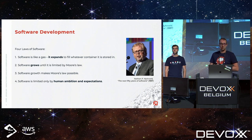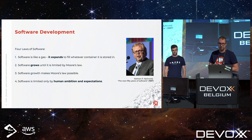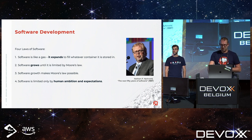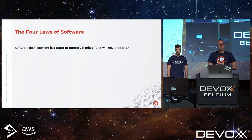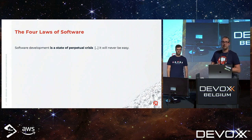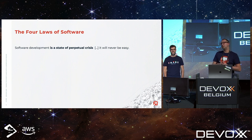The fourth law — which everybody in the audience can attest to — is that software is mostly limited by human ambition, expectations, and imagination. If you work for customers, ambition and expectations are primarily what you deal with. The essay ended on a cheery note stating that software development is a state of perpetual crisis and will never be easy. So if you're wondering about job security, you'll have a job — but it will suck.